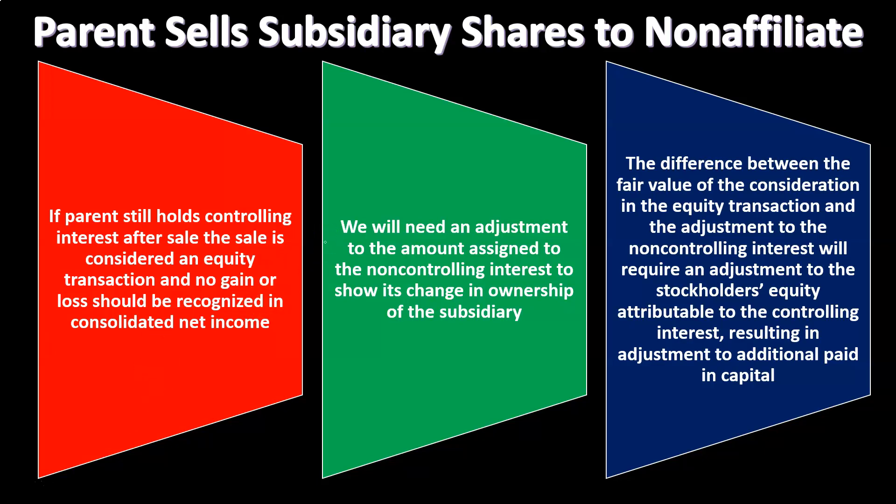We will need to adjust the amount assigned to the non-controlling interest to show its change in ownership of the subsidiary. Because a sale took place, if you think about percentages, the non-controlling percentage has gone up while the controlling interest percentage would go down — however, the controlling interest still maintains control, meaning they still have over 51 percent as the general rule.